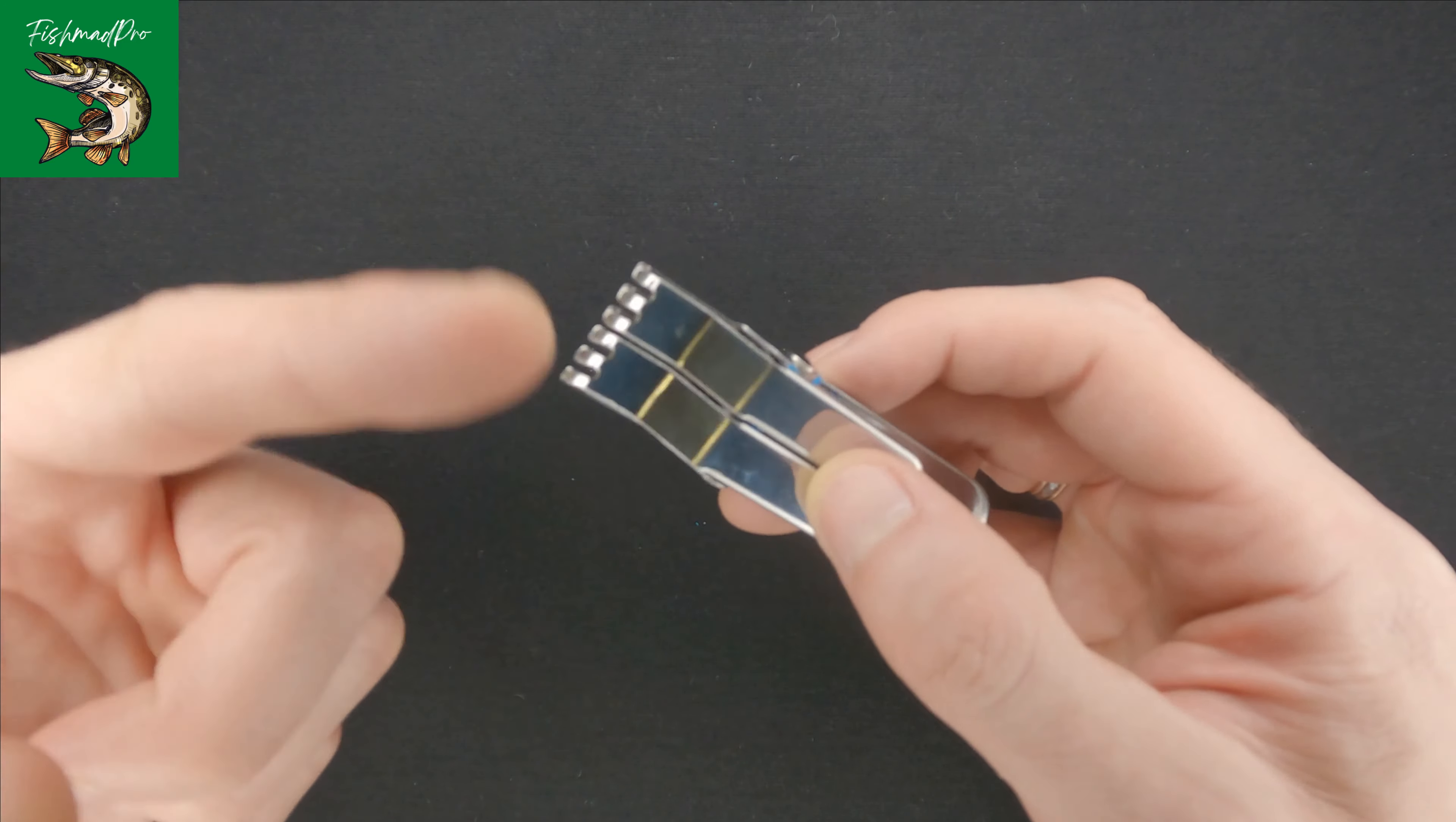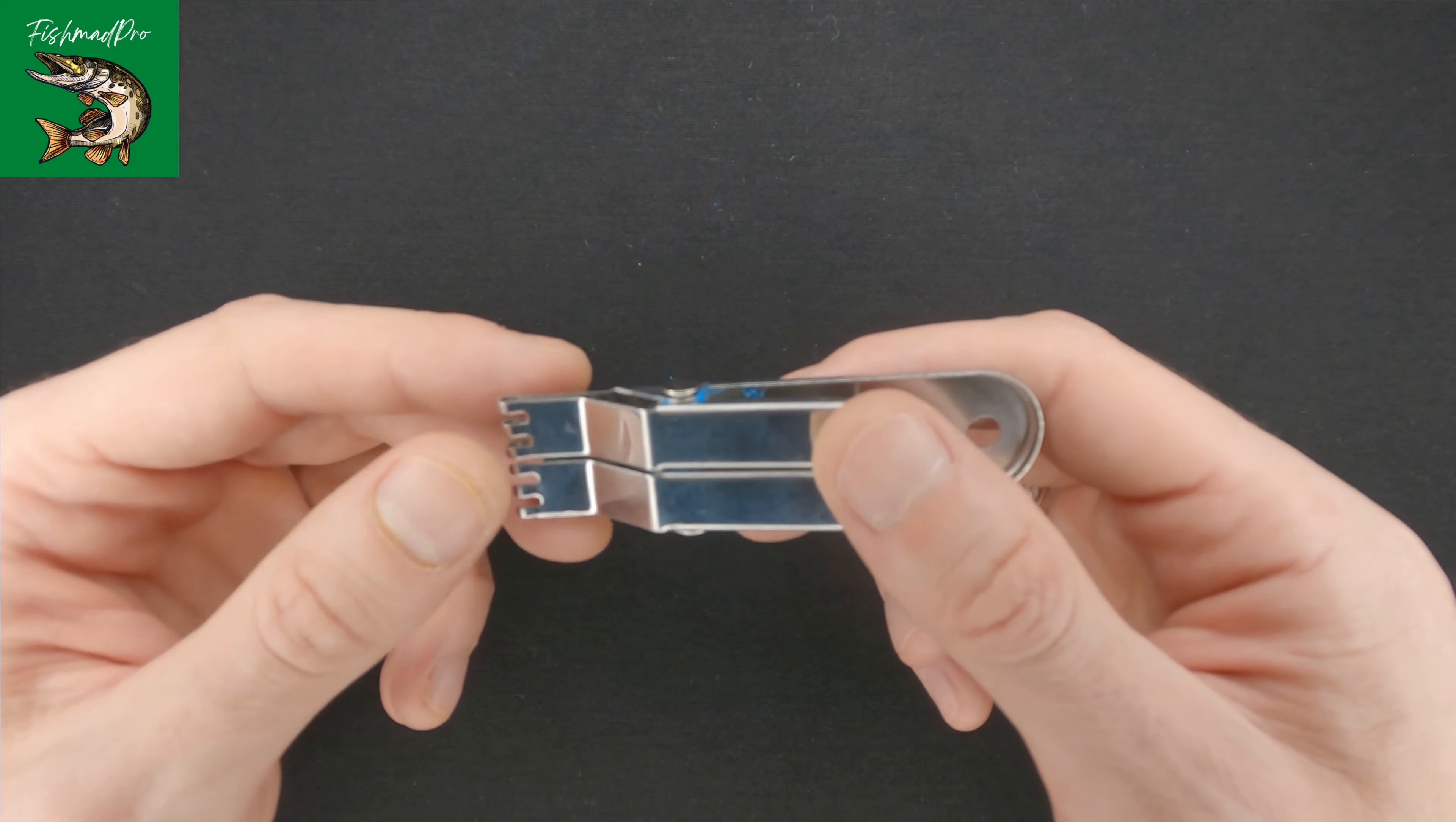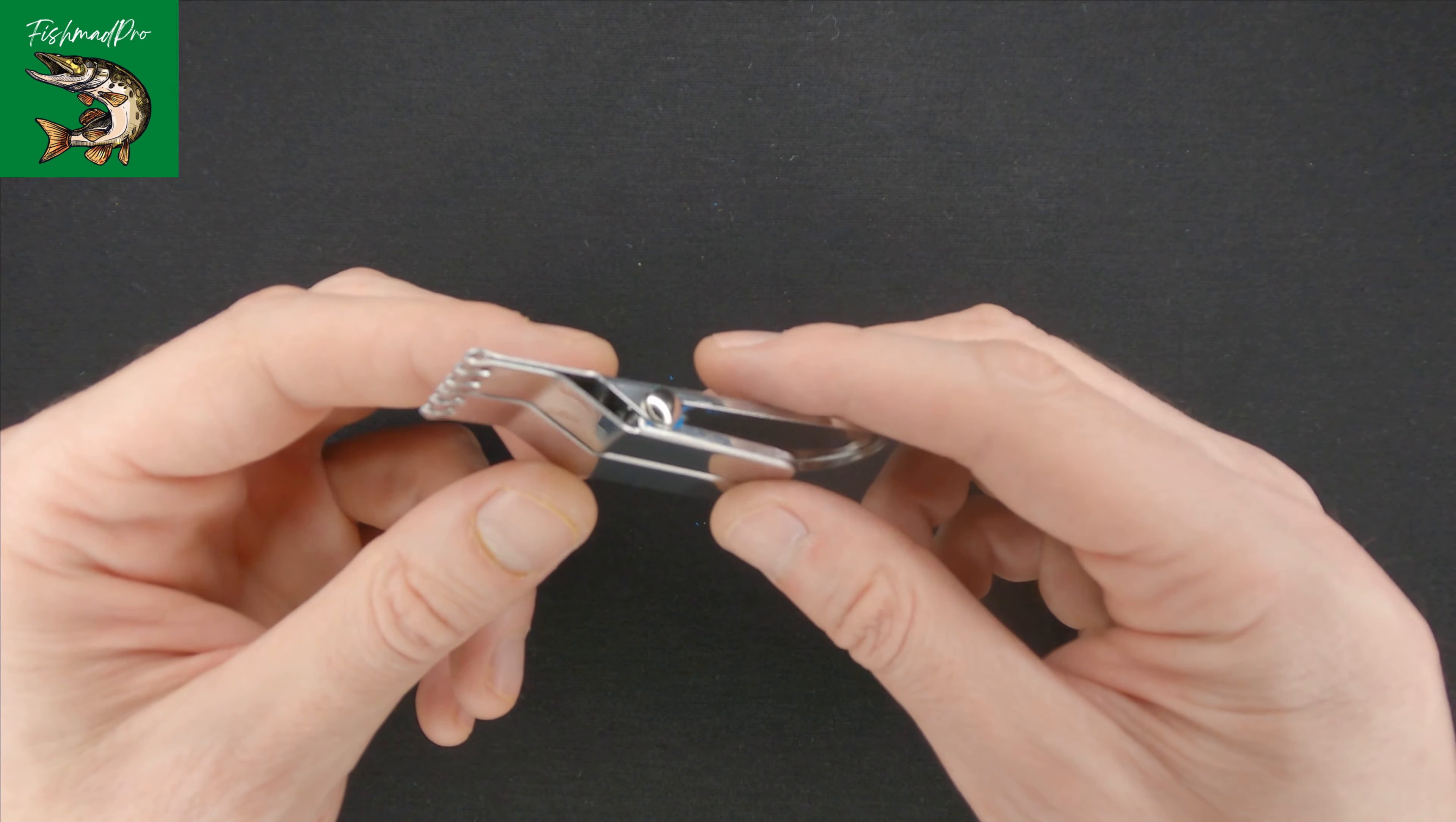But again, the more it spins, the more it wobbles, the better it is, because fish actually love bait which moves under the water.